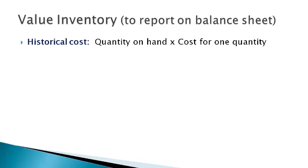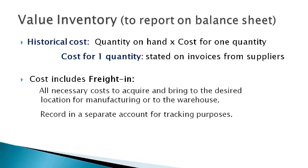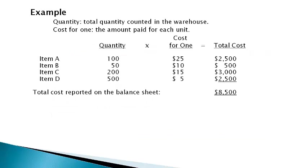Inventory is reported on the balance sheet at the total cost of all inventory items owned at the end of the period. The accountant determines the cost of each item from invoices and amounts paid to suppliers. The cost of inventory includes all necessary costs to acquire the inventory and bring it to the desired location for manufacturing or to the warehouse. The cost of shipping to the buyer is called freight in. Freight in costs are generally recorded in a separate account for tracking purposes, and purchases and freight in are added together to get the total cost.